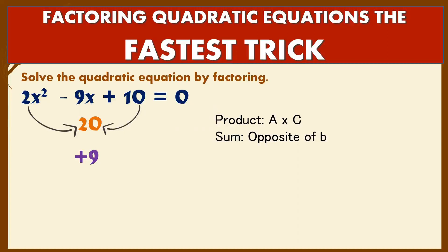After that, look for the factors of 20 that will add to give you positive 9. So you have two factors of 20, 5 and 4. You take positive 5 and positive 4. Added together it becomes positive 9, then multiplied together will become positive 20.